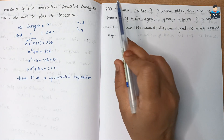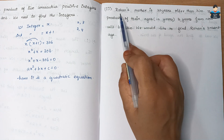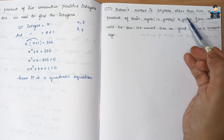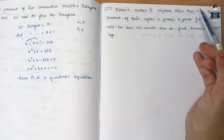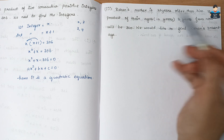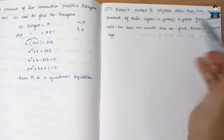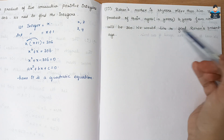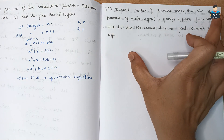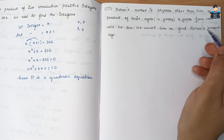Next, the third subdivision: Rohan's mother is 26 years older than him. The product of their ages in years three years from now will be 360. We would like to find Rohan's present age, representing the situation as a quadratic equation.